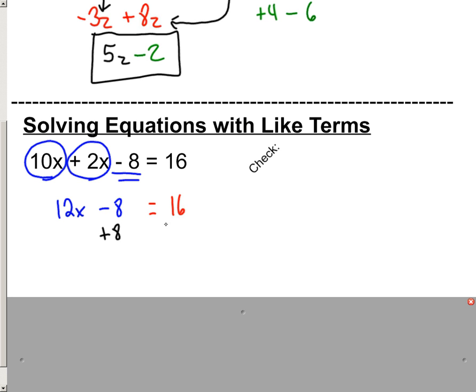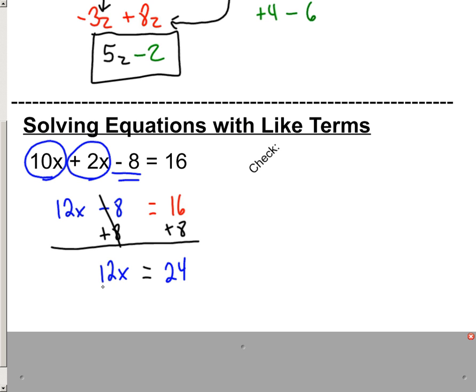So add 8 to both sides. Negative 8 plus 8 is 0, so I'll pull down my 12x. I'll pull down my equal sign, and 16 plus 8 is 24. We're running out of room here. So let's go through and get ourselves a little bit more room. 12 is multiplying the x, so we divide by 12. 12 divided by 12 is 1, and 1 times x is x. Since I divided the left side by 12, we divide the right side by 12, and 24 divided by 12 is 2.